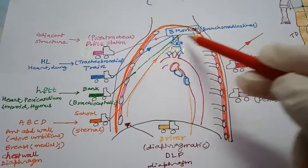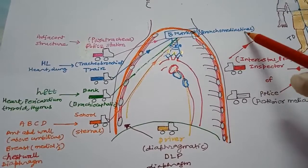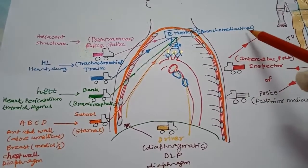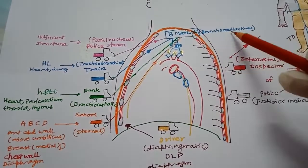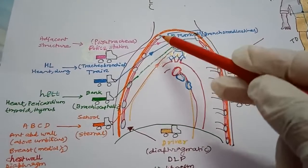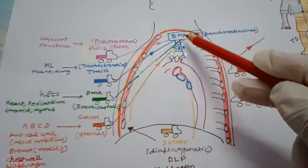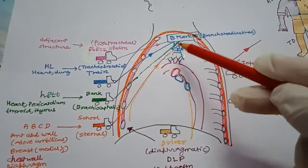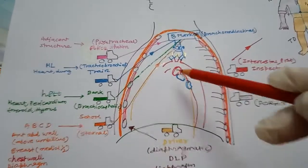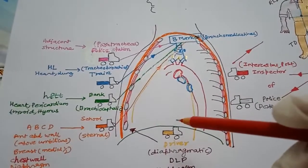All four garbage trucks carry their garbage to the B market, which stands for bronchomediastinal lymph node — the secondary channel. The anterior group of the primary channel goes there, and the middle set also drains to the secondary channel.